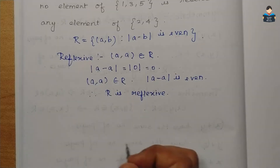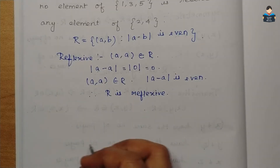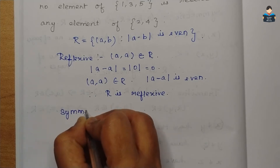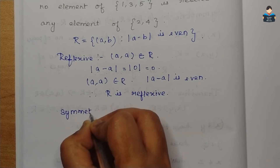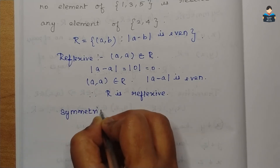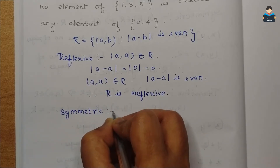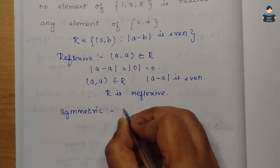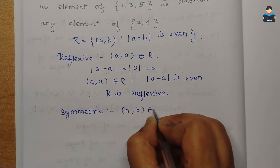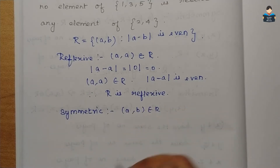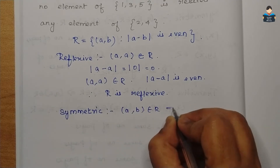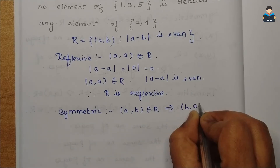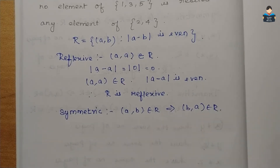Next, we check the symmetric condition. The symmetric condition states: if (a, b) belongs to R, then this implies (b, a) belongs to R.